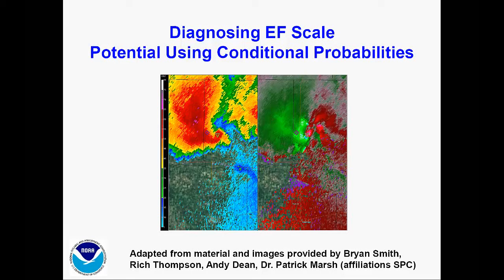Hello everyone, this is John Eyes at Central Region Headquarters SSD, and welcome to our ongoing series of science sharing webinars. Today we have Dick Wagamaker, the MIC at White Lake Detroit WFO, and his title is Diagnosing EF Scale Potentially Using Conditional Probabilities. This is excellent material you should be able to use directly for impact-based warnings. So without further ado, Dick, it's all yours.